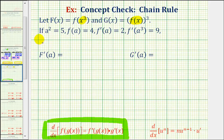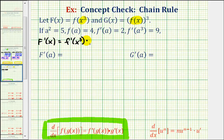So let's start by finding big F prime of X. The outer function is F and the inner function is X cubed. So the derivative would be F prime of X cubed — this is the derivative of the outer function evaluated at the inner function — times the derivative of X cubed, which would be three X squared. So if we want to find F prime of A, we'll substitute A for X. Let's also change the order here: three X squared would be three A squared times F prime of A cubed.